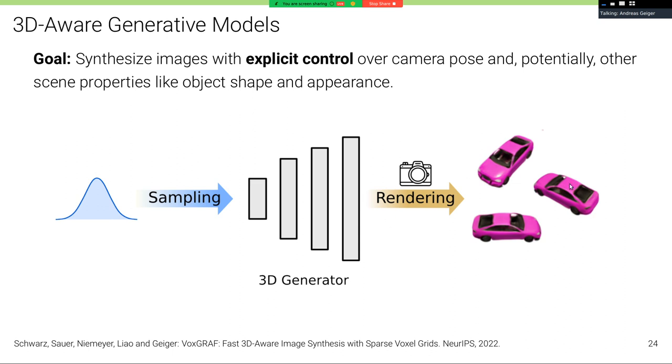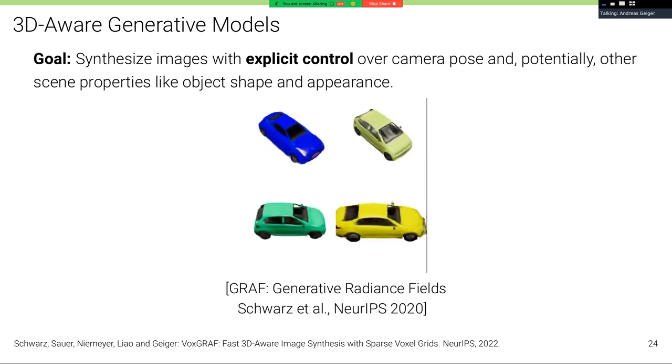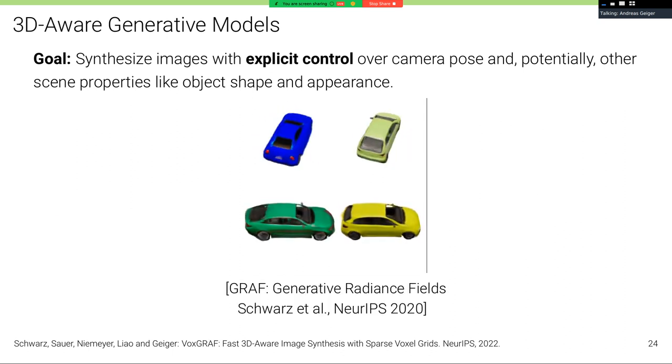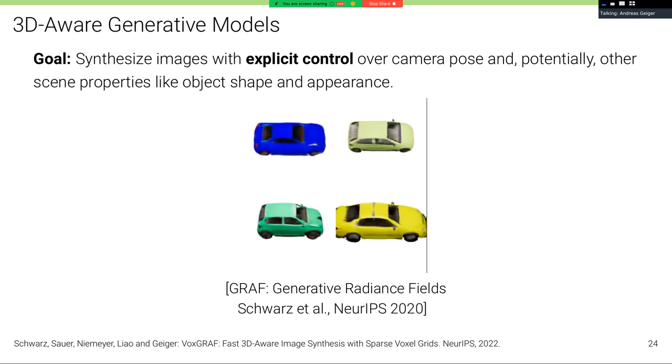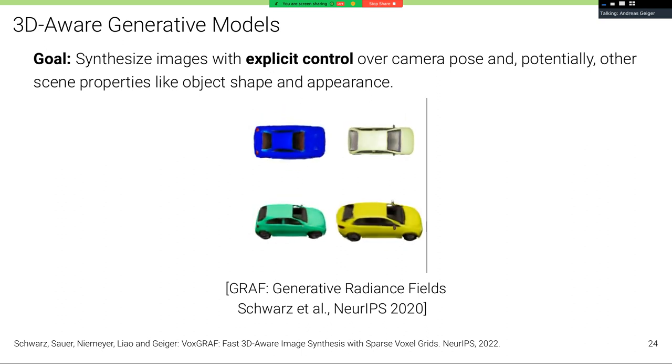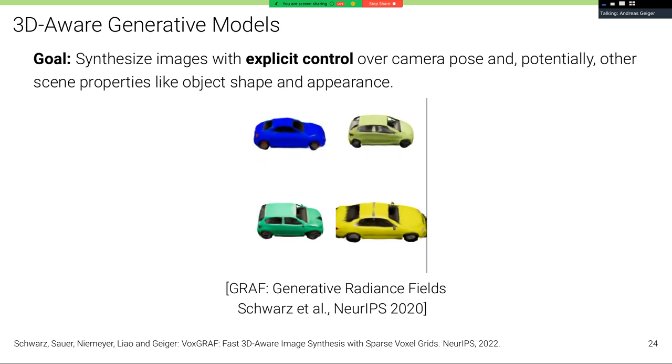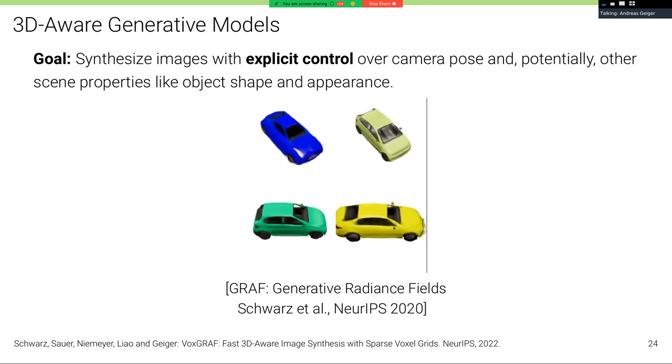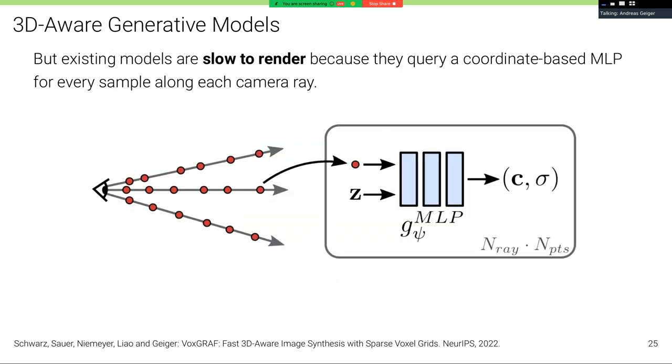So here's a simple picture of such a GAN, our generator, where we sample a latent from a standard distribution and push this through the 3D generator. This gives us a 3D reconstruction that we render into an image, and these images we compare to one of our dataset images. And one of the first models we did in this regime was called GRAF, Generative Radiance Fields, which built on NeRF, basically built a 3D-aware generative model for NeRF. So this model was quite nice. It produced reasonable results and it was trained only on unstructured 2D image collections. But it was slow to render because it required a query to a coordinate-based MLP with many layers for every sample along each camera ray to produce the final image.